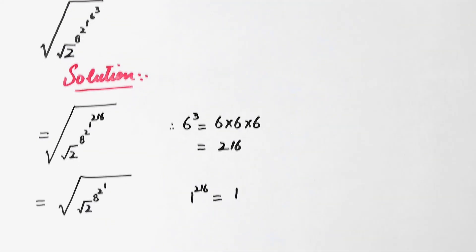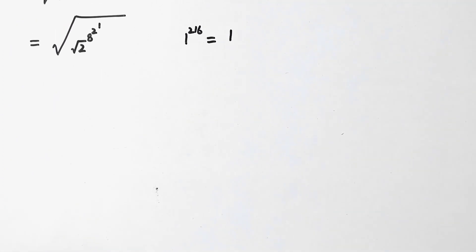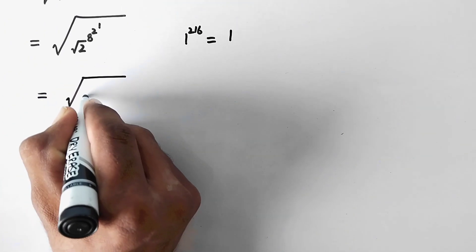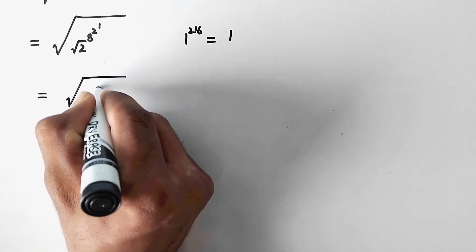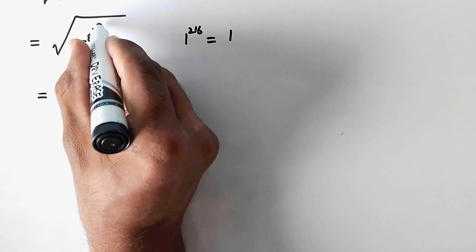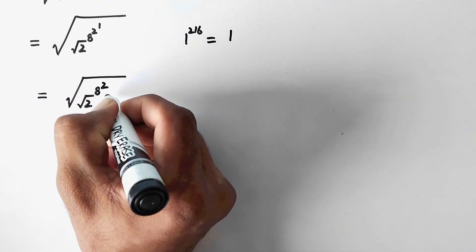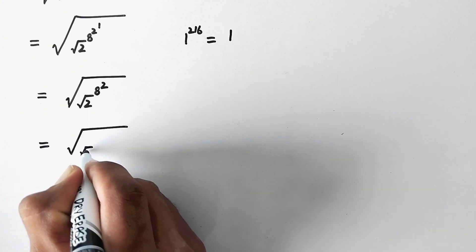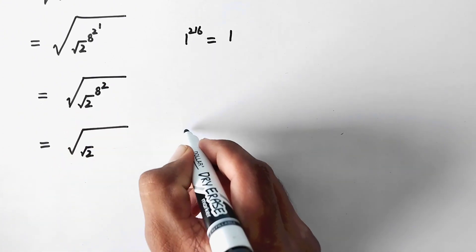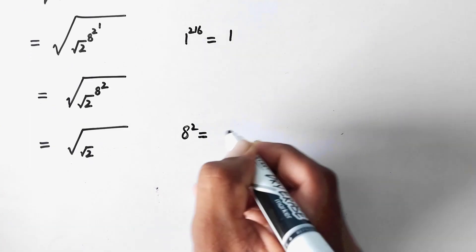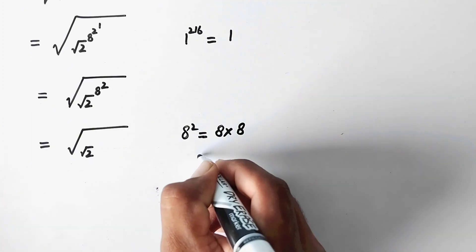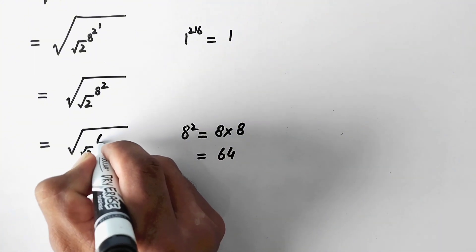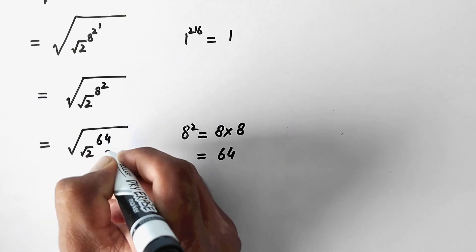Now the expression simplifies to square root times square root of 2 to power 8 to power 2 to power 1, and 1 to power anything is just 1, so 2 to power 1 equals 2. In the next step we have square root times square root of 2 to power 2 to power 2, and since 2 to power 2 is 4, wait — continuing, we arrive at square root of 2 to power 64.